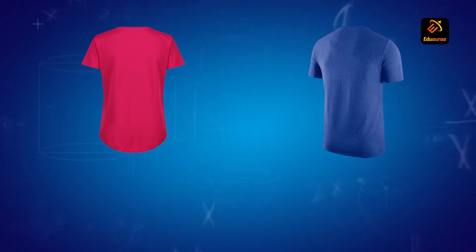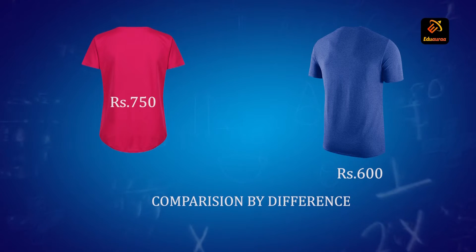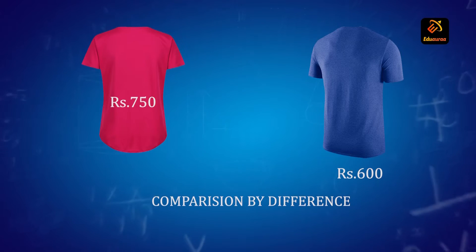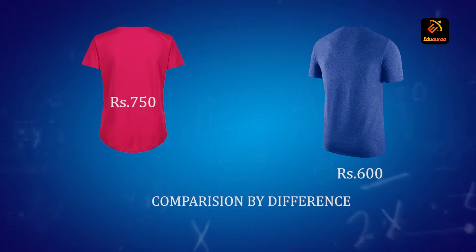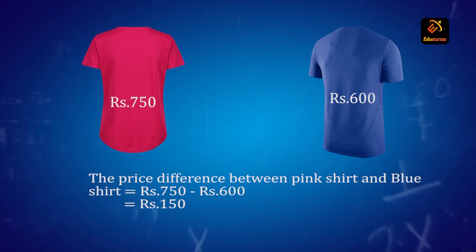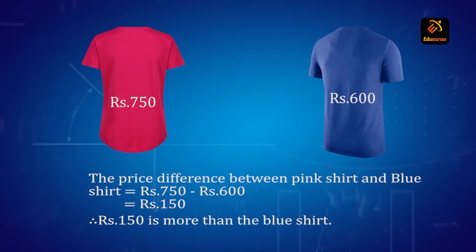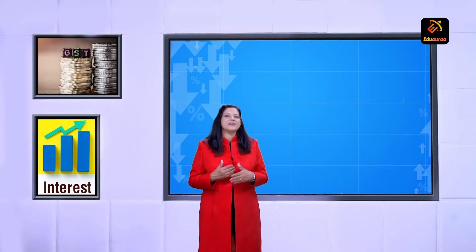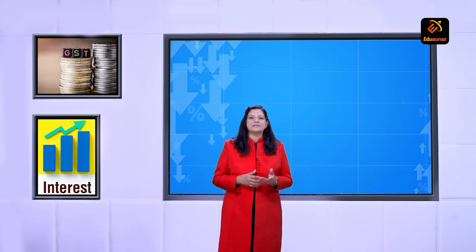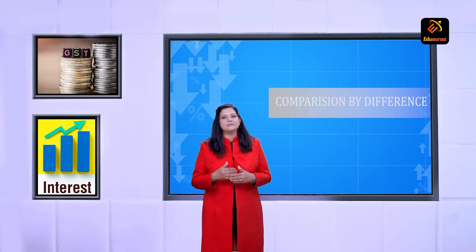For example, Ajay has bought two shirts — one pink and the other blue — for 750 rupees and 600 rupees respectively. For comparing their costs, we can find the difference: the cost of the pink shirt is 750 minus 600, equal to 150 rupees more than the blue shirt. Thus, we have compared the costs by finding the difference between them. Such a comparison is called comparison by difference.